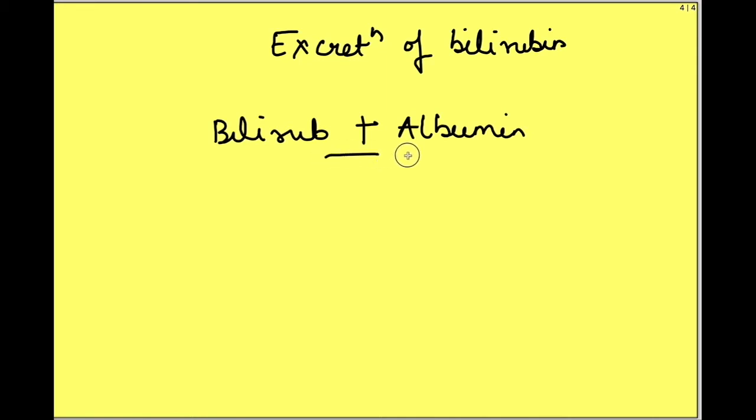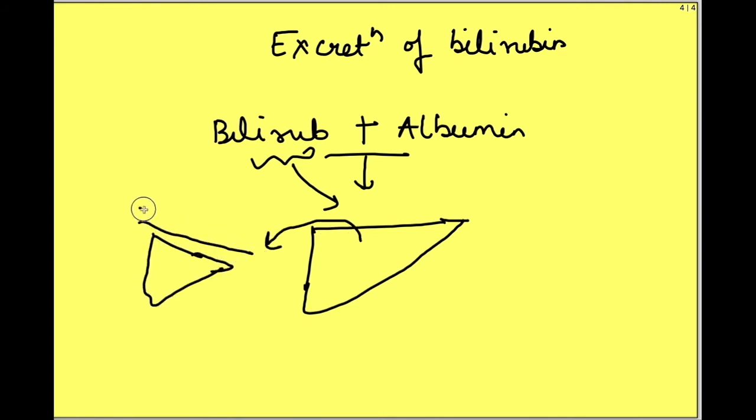When this complex reaches the liver, bilirubin gets separated from albumin and enters the liver by facilitated diffusion. Here is the blood vessel and this complex enters and is taken up at the level of the hepatocytes by facilitated diffusion. Since it's diffusion, it's important that intracellular bilirubin concentration is kept low and back diffusion is prevented.